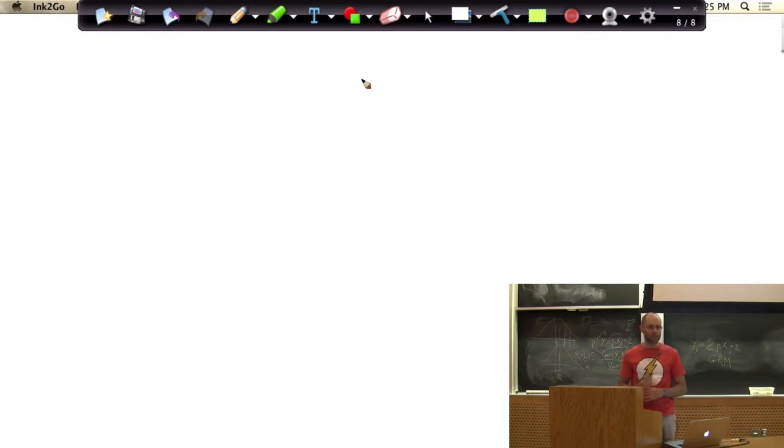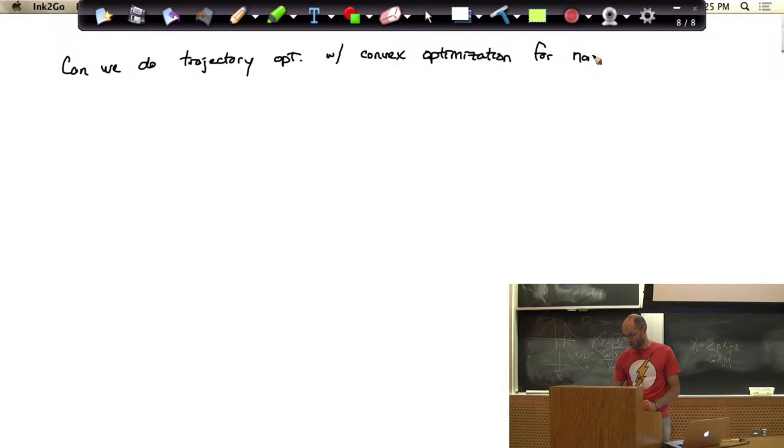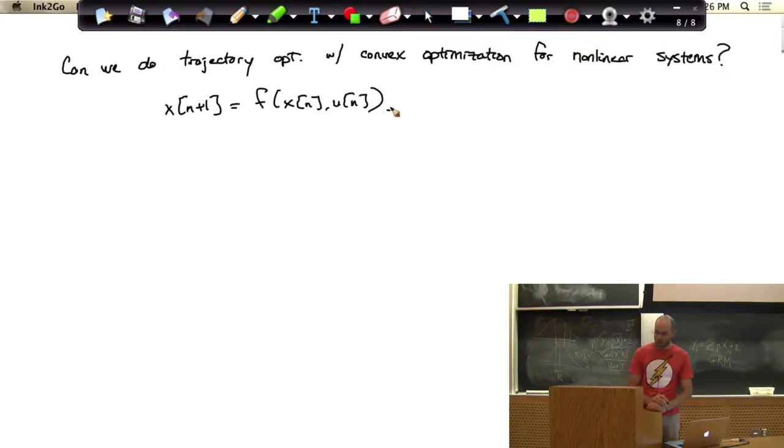What hope is there to do convex optimization for nonlinear systems? So I'll stay discrete here in time only. So it's not a linear constraint anymore, so it's not going to just snap into the QP formulation.